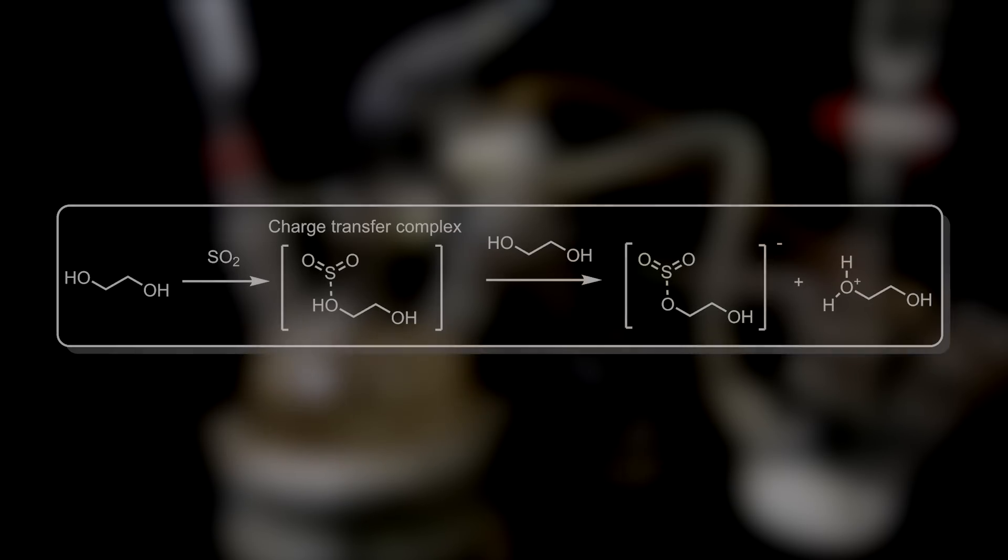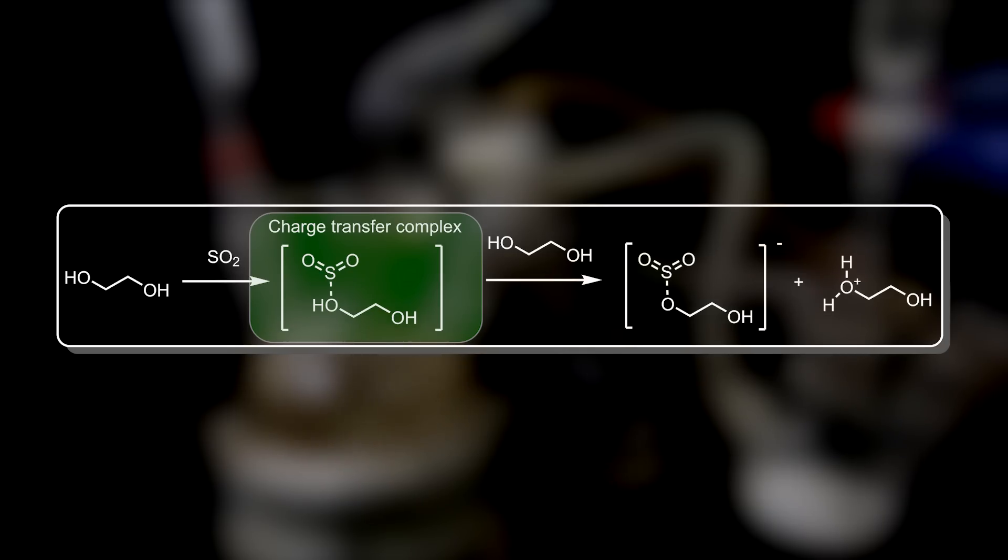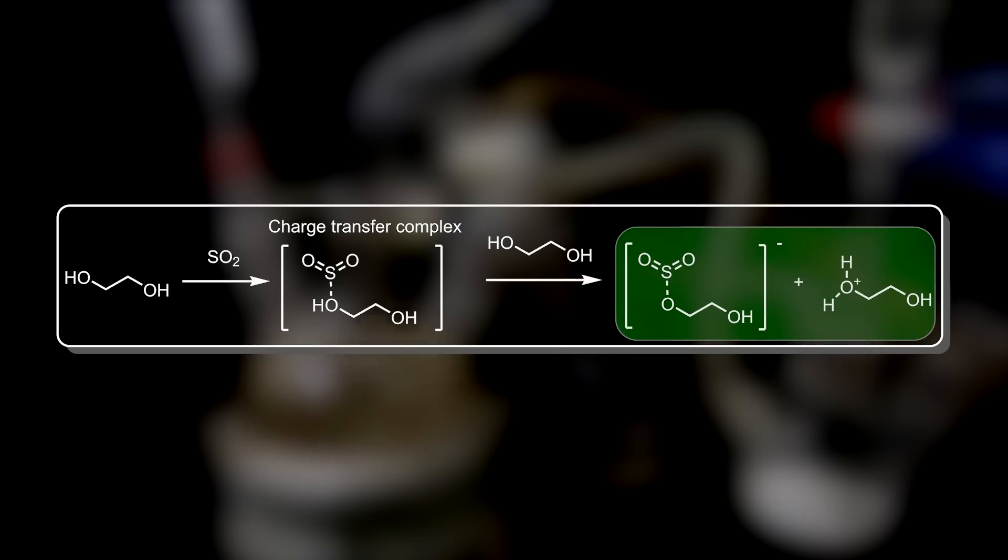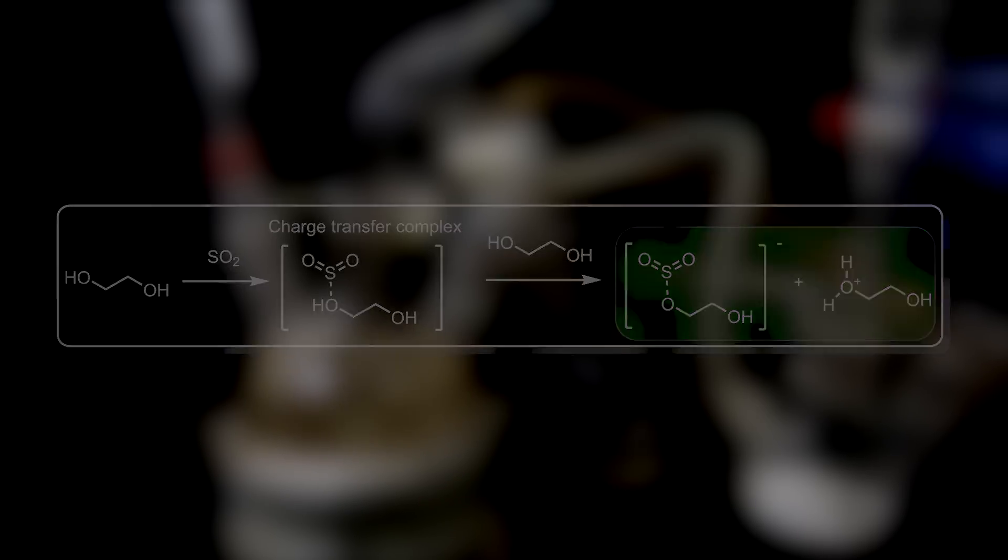Another way to generate a proton here, mentioned in literature, is by the formation of the ethylene glycol-sulfur dioxide charge transfer complex, which can react with another ethylene glycol molecule to give up a proton that can then be transferred to another molecule. For a weak charge transfer complex like this to dissociate requires a highly polar solution, as we have here, though this reaction is probably not very significant.